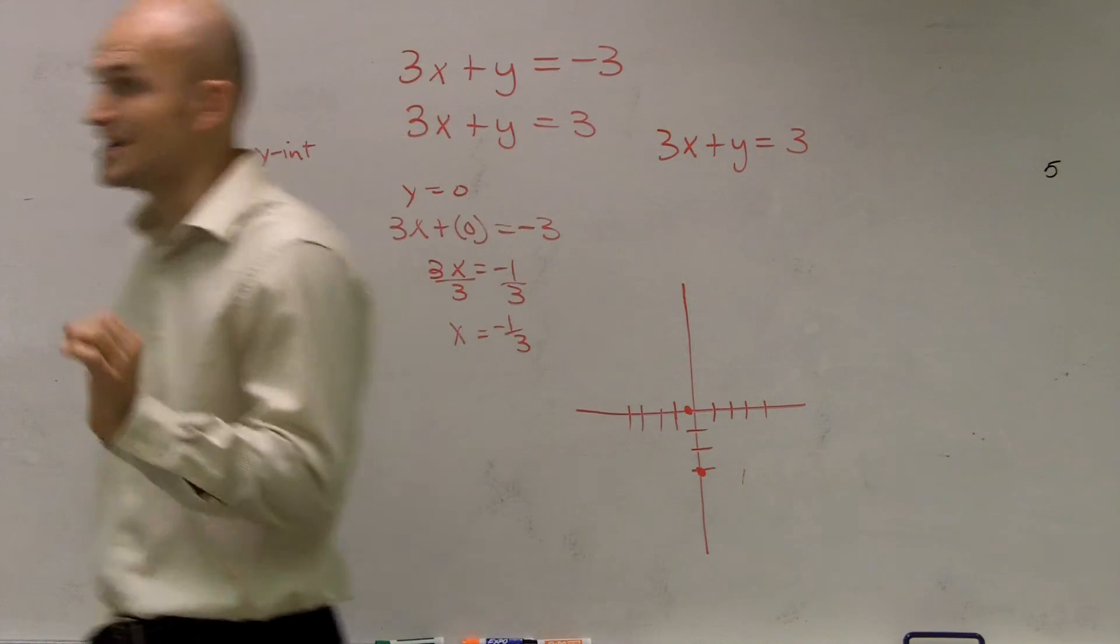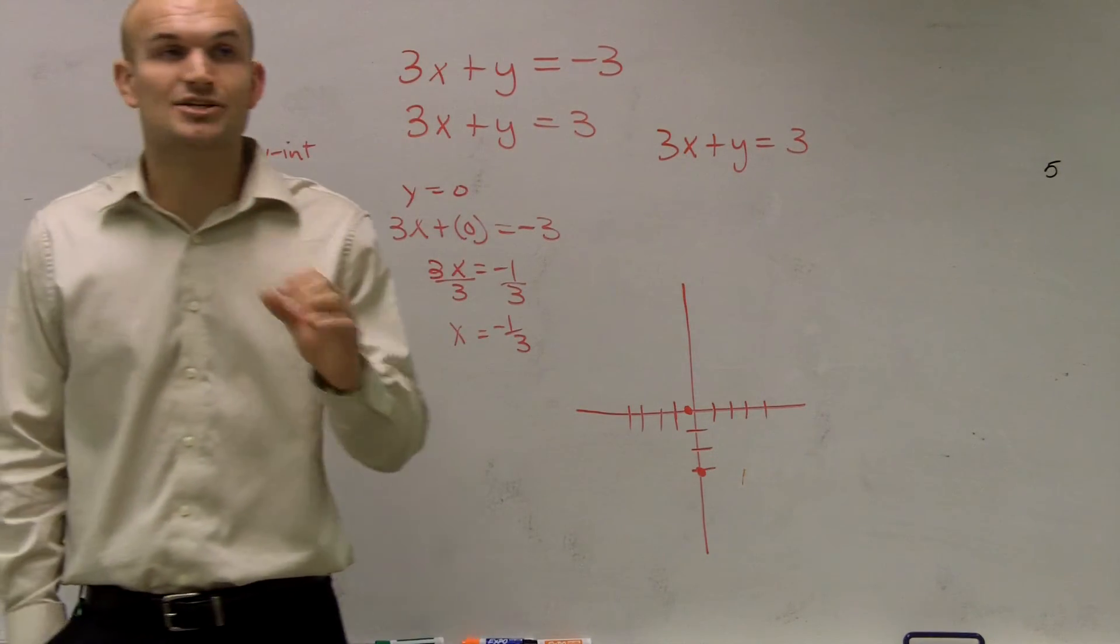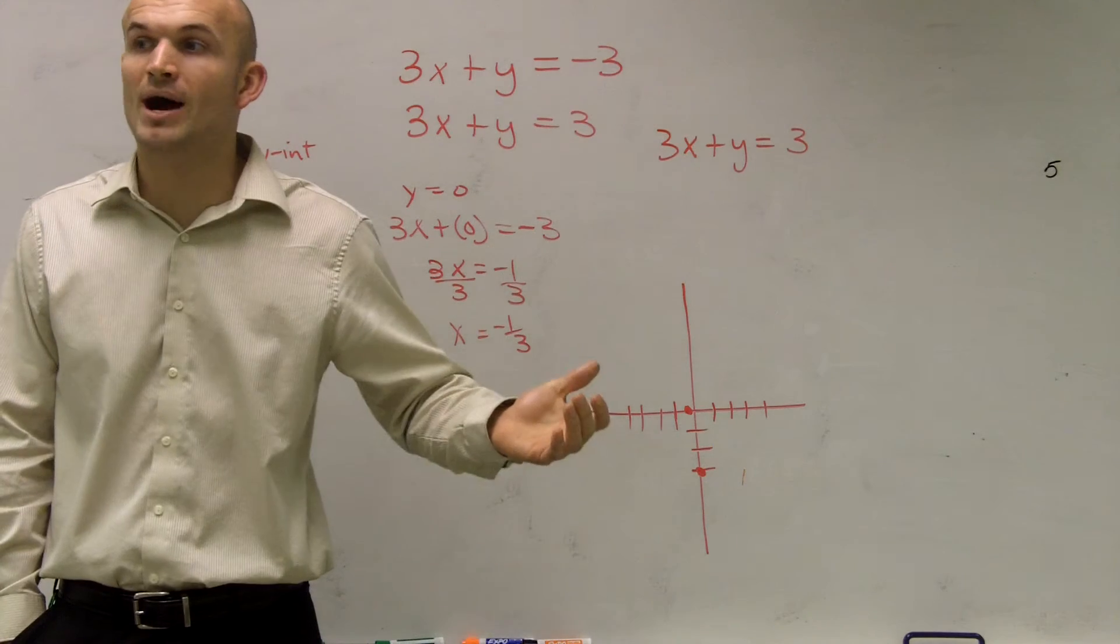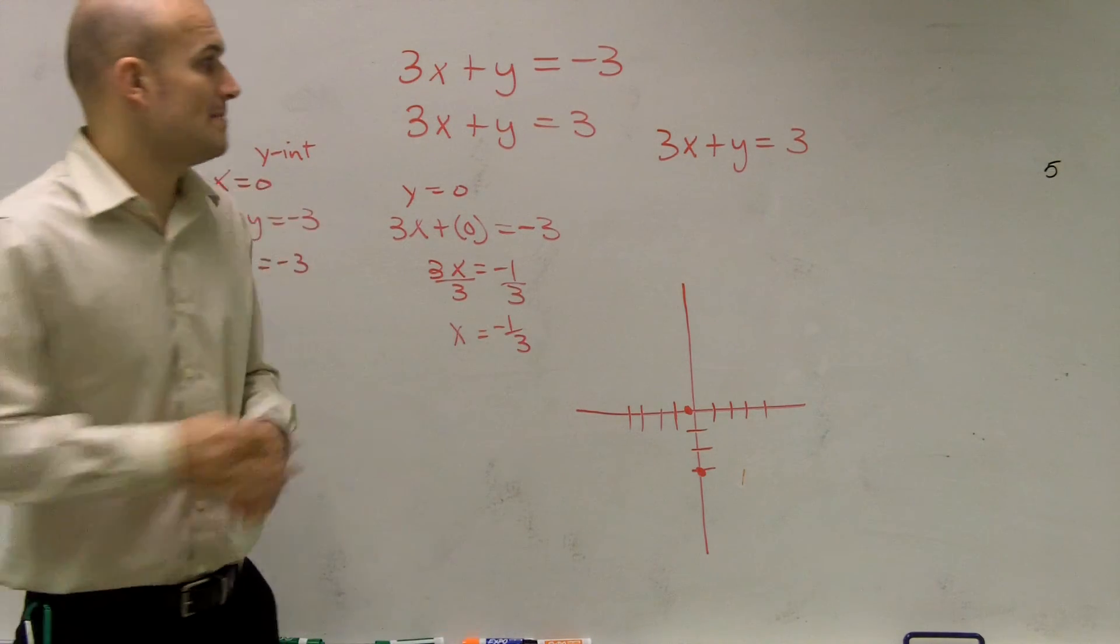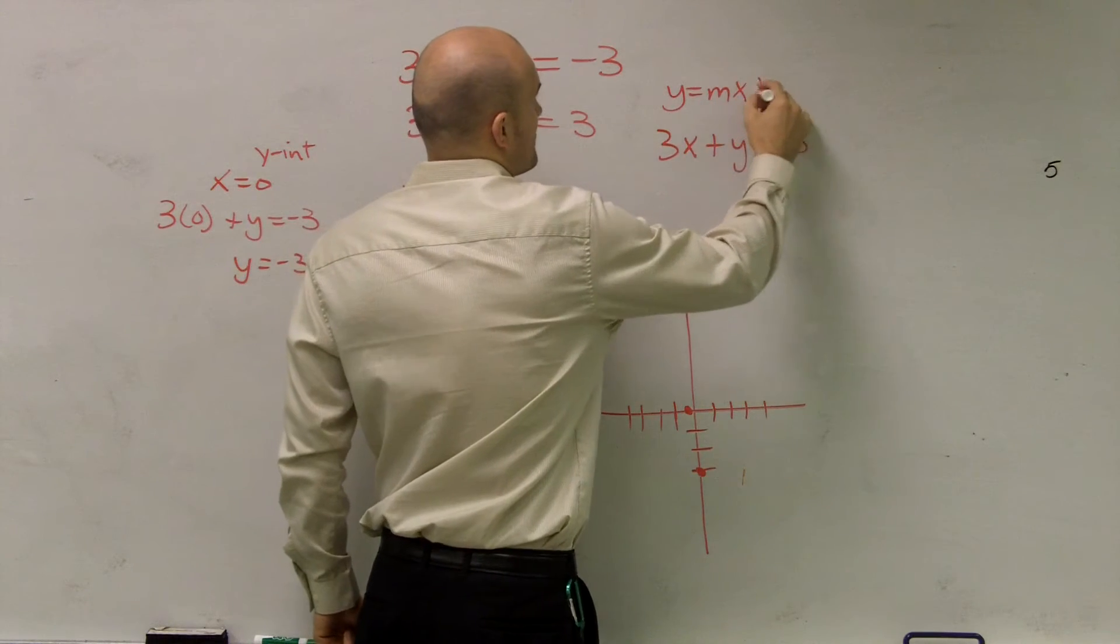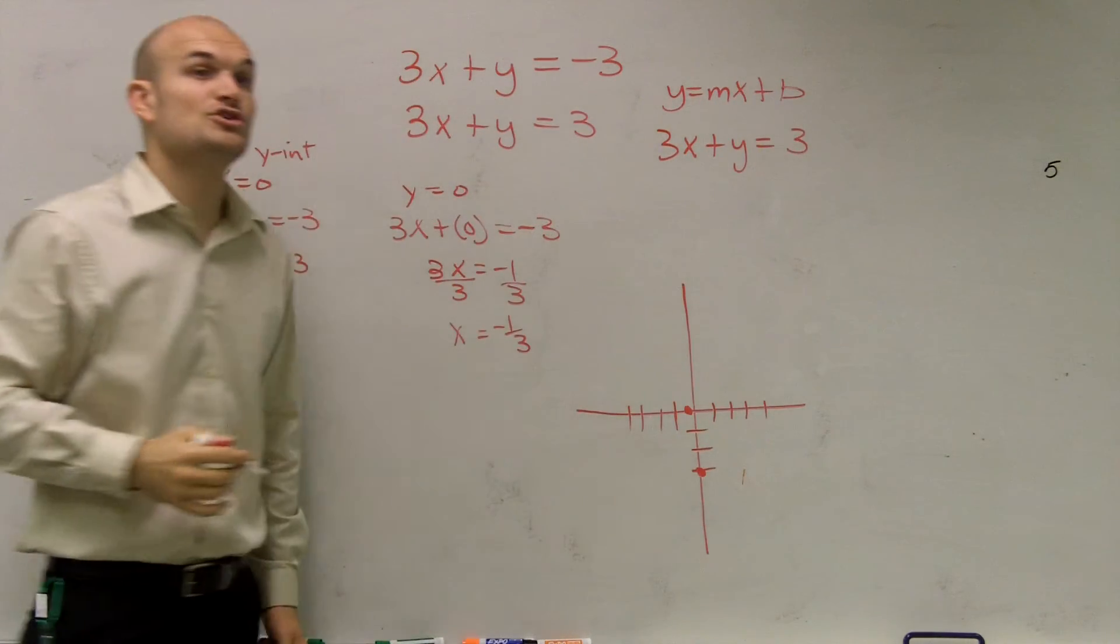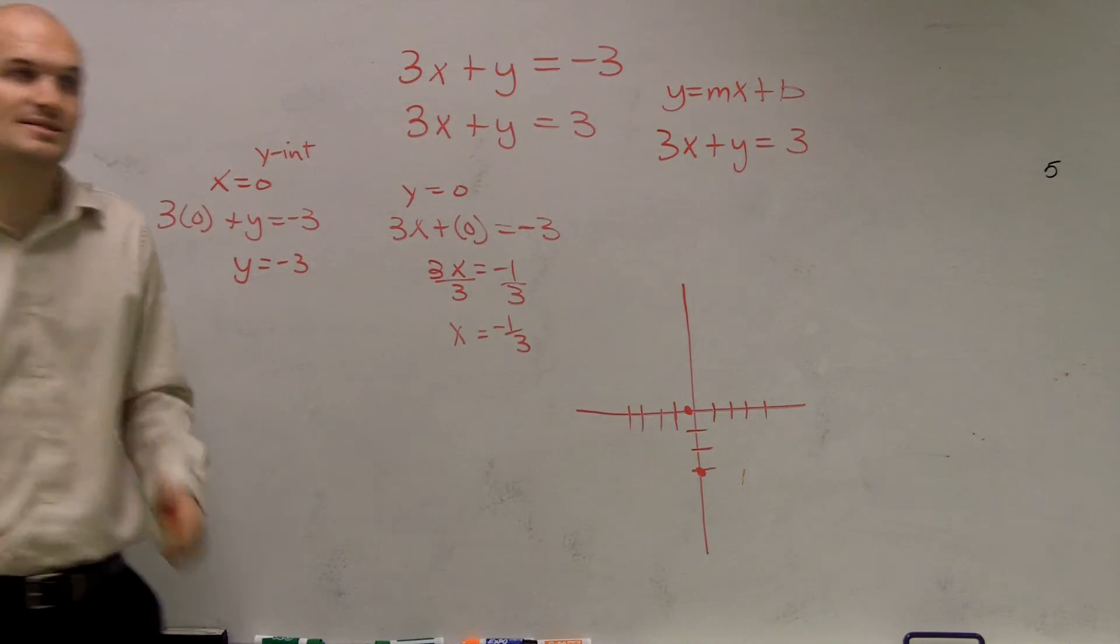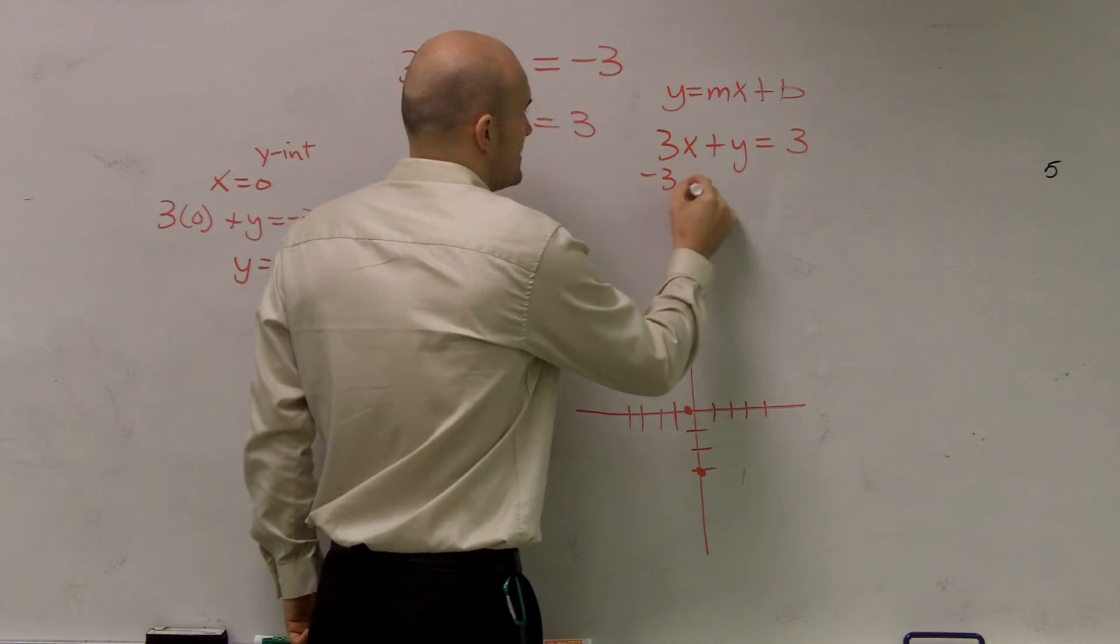However, when my y is by itself, I think it's actually easier just to solve for y equals mx plus b. What I mean is, why don't we just put it in slope-intercept form? So to do that, you have to get the y by itself. So subtract 3x.